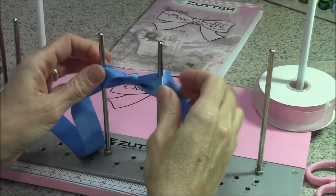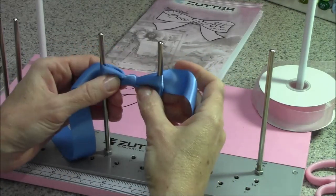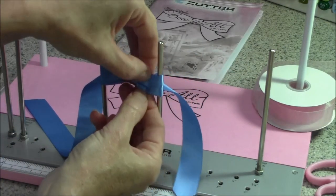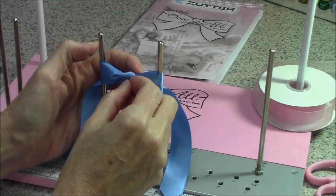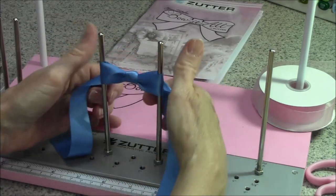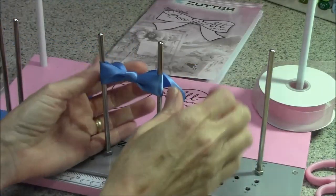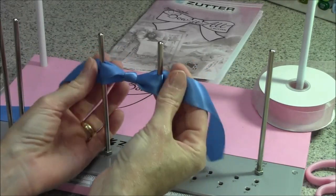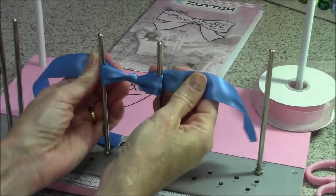Now the nice thing about this tool is you're always looking at the front of your bow so you can see what's going on. If you want to adjust anything, you can go ahead and do that now before you pull it all the way tight. Make sure the center is in the center and not off to one side or the other. Once you're happy with the way the bow looks, you're going to tighten it as much as you can by pulling out to the sides. You don't want to pull up or down. You want to go out to either side.